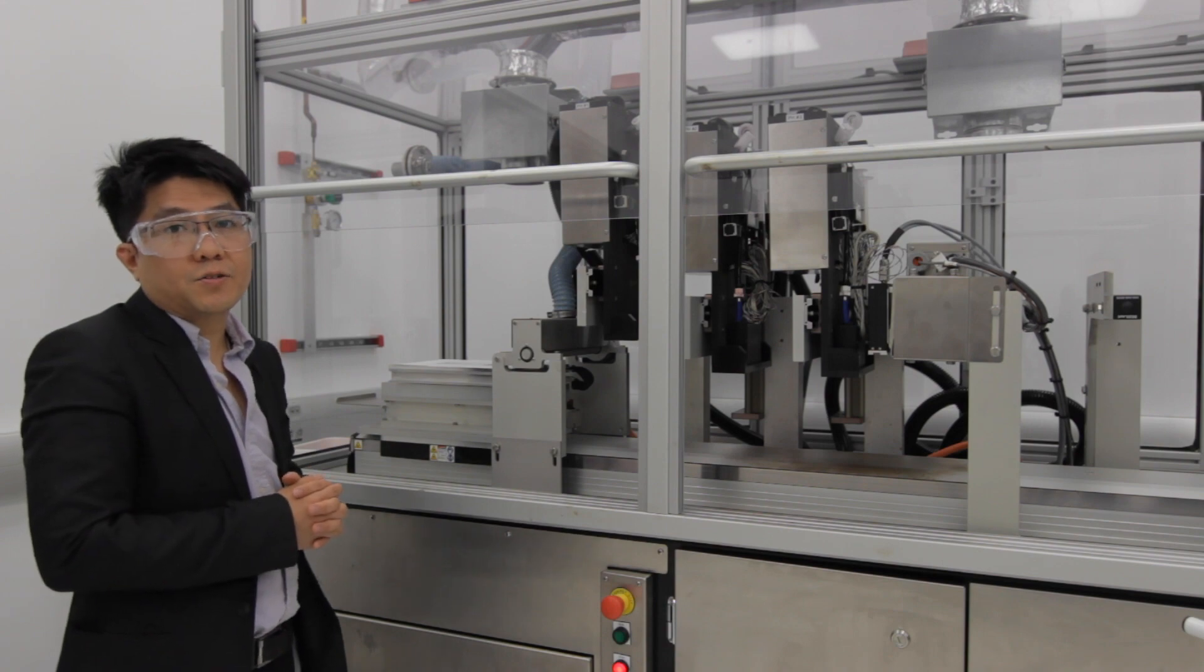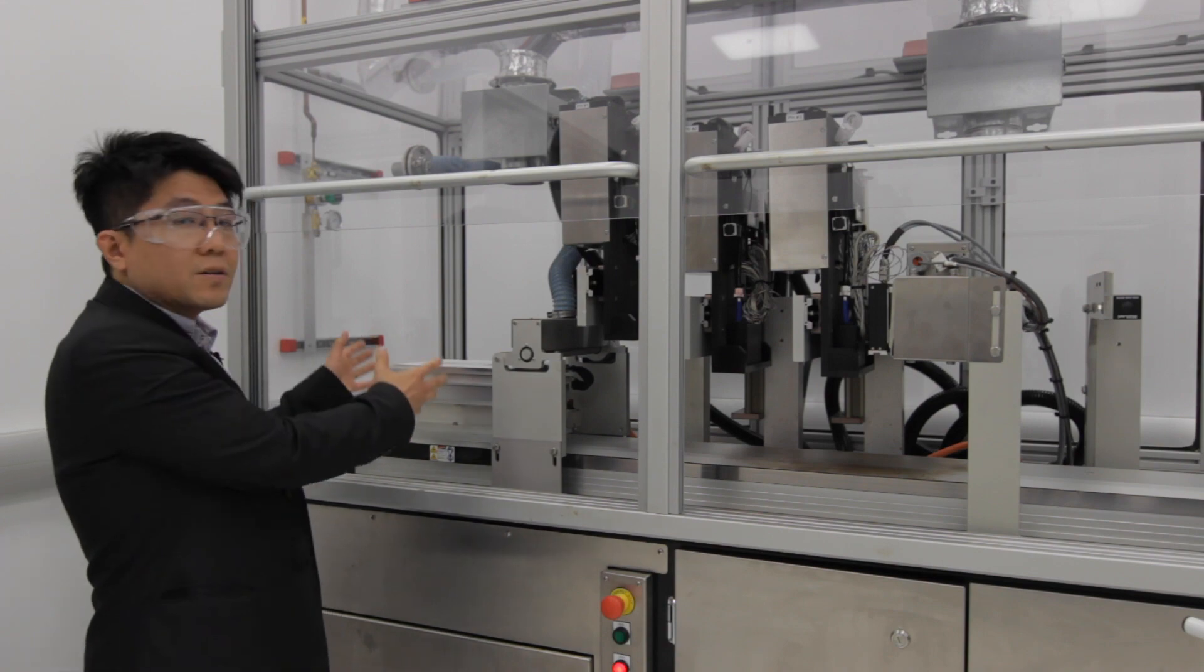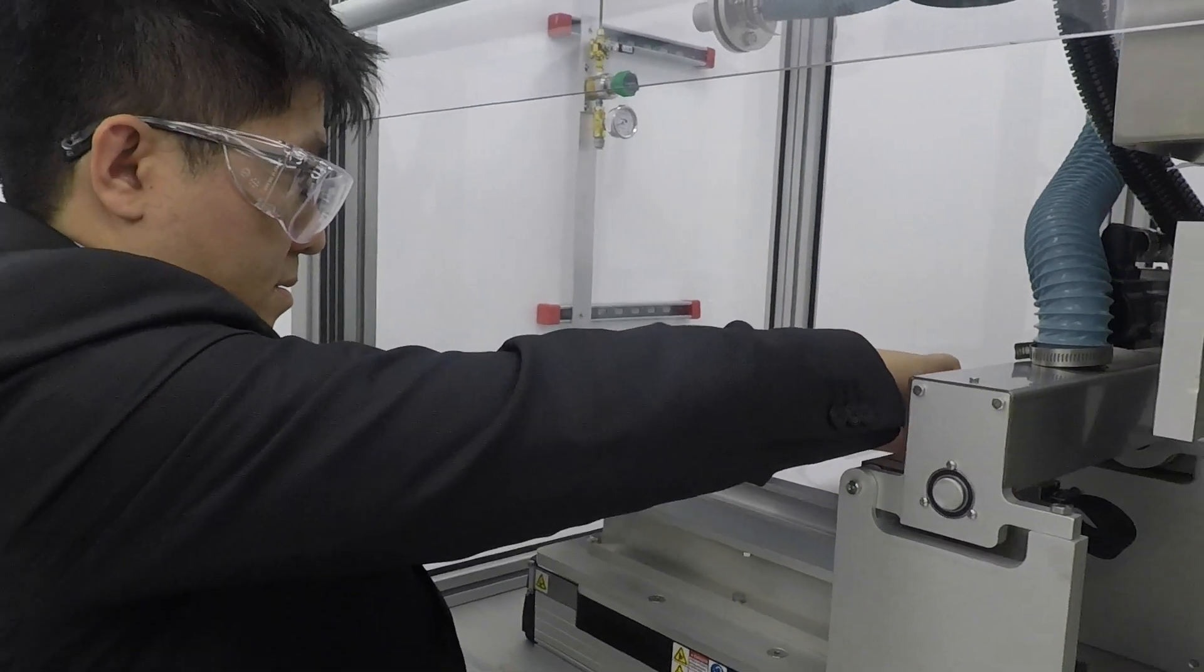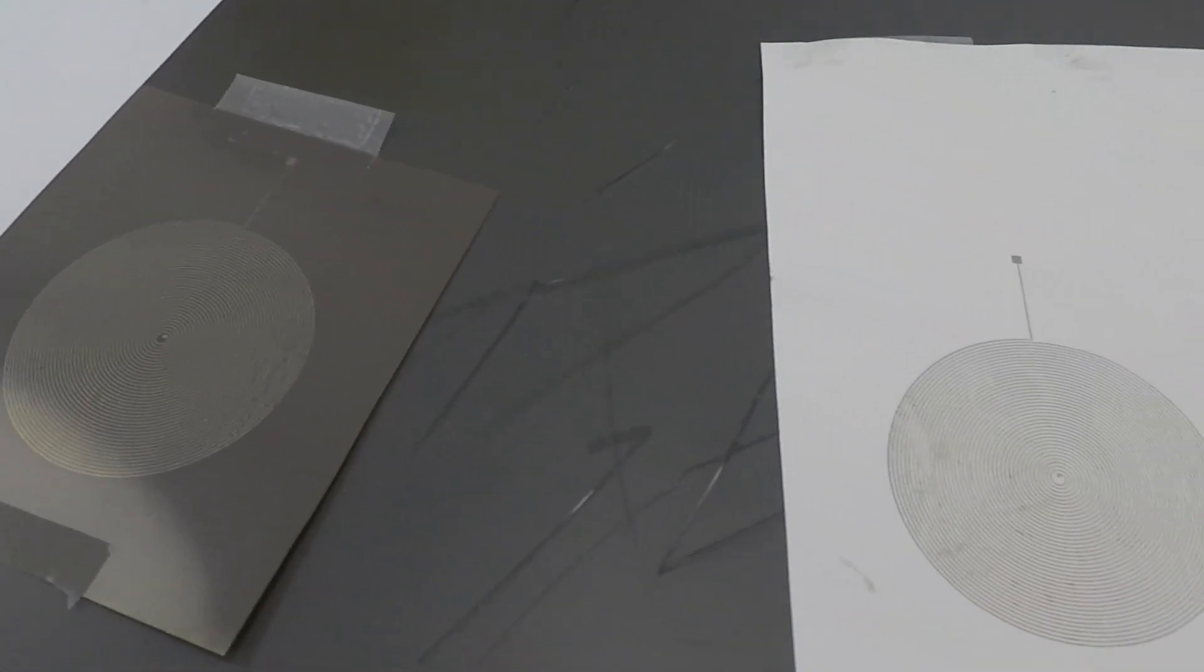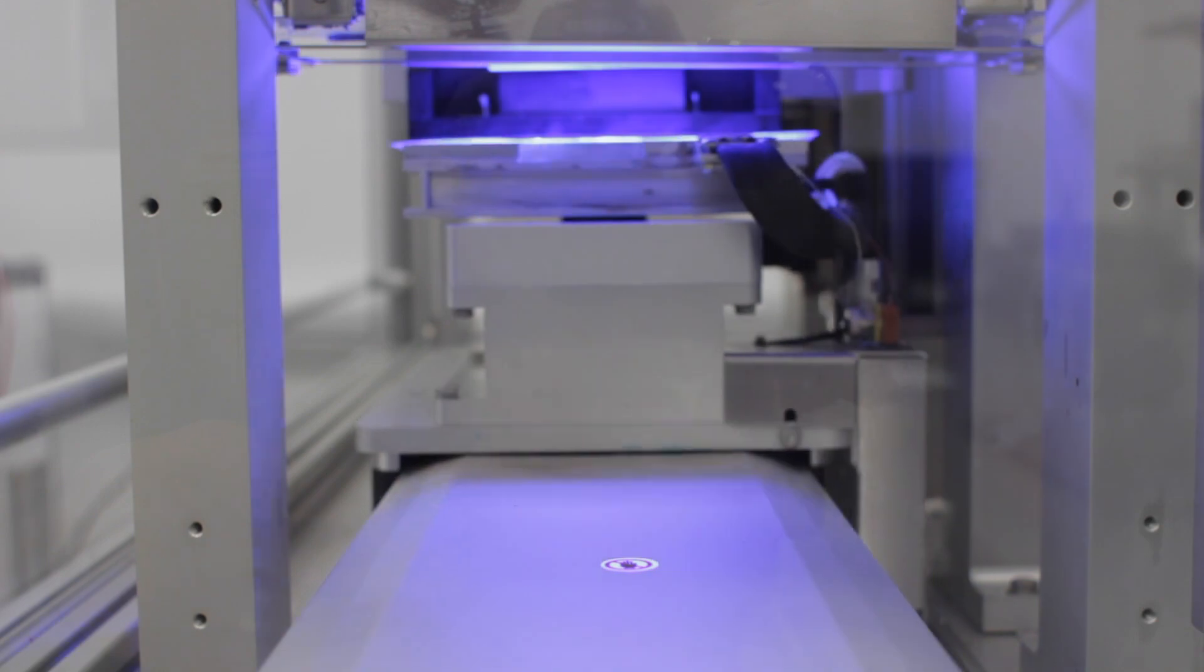So this is a pilot scale industrial inkjet tool. If you look to the left hand side here, we have a slat system. This slat would carry the substrate that you're trying to print on from the left hand side to the right hand side.